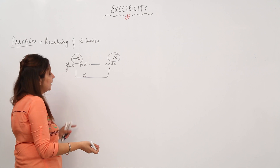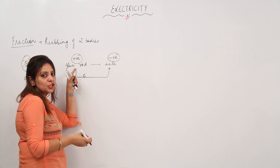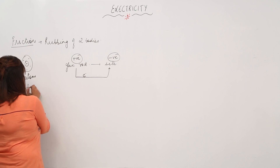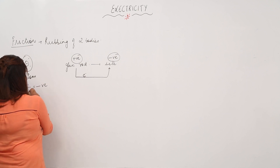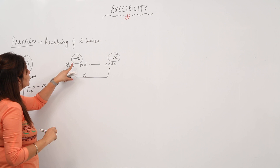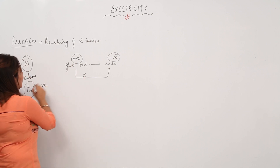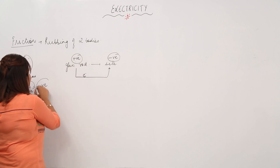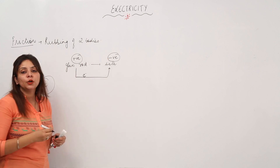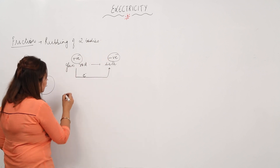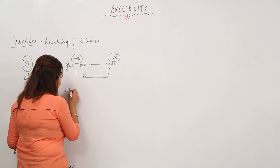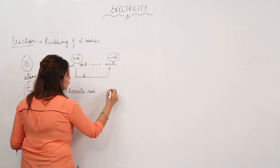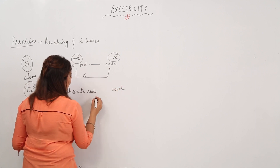The one which loses electrons acquires a positive charge, and the one that gains electrons acquires a negative charge, because the net negative charge is increasing in one and decreasing in the other. In a neutral atom there is an equal number of positive and negative charges. When it loses electrons, positive charge exceeds, so it acquires a positive charge; when it gains electrons, negative charge exceeds, so it acquires a negative charge.